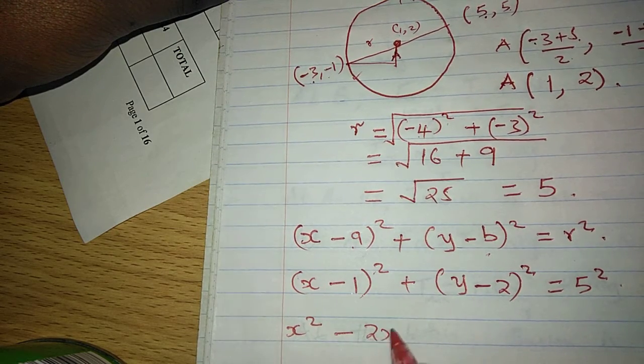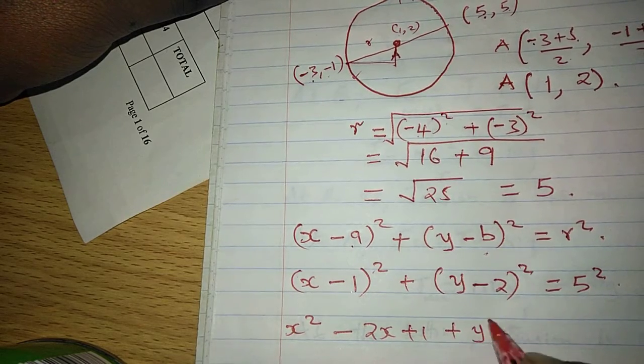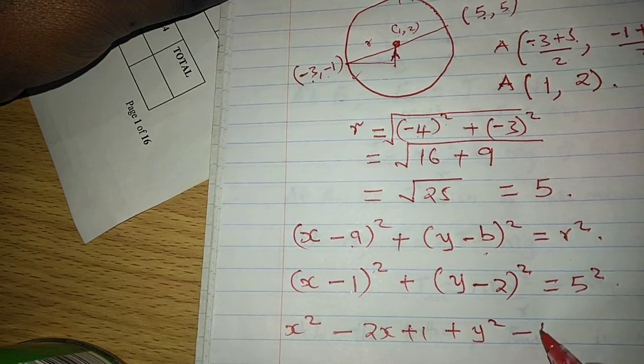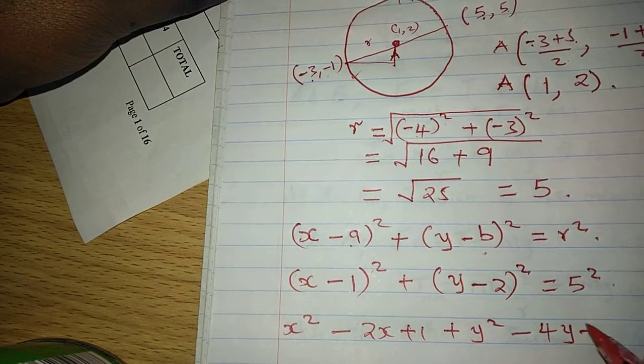So (x - 1)² equals x² - 2x + 1, plus y² - 4y + 4